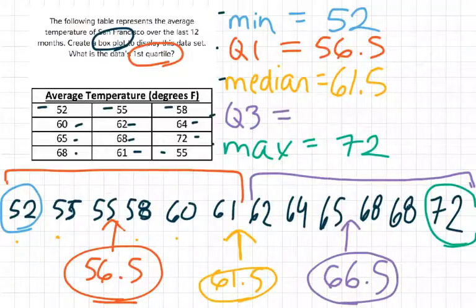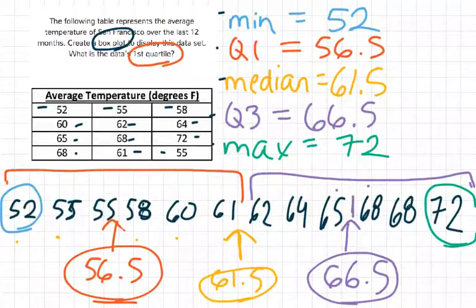That's the value right in between 65 and 68, halfway in between because 65 and 68 are three apart. So half of three is 1.5. So we need to add 1.5 to 65 to get 66.5. So I've got my five values here.